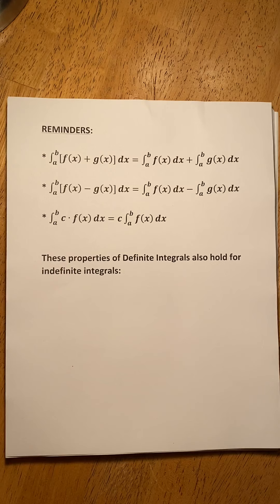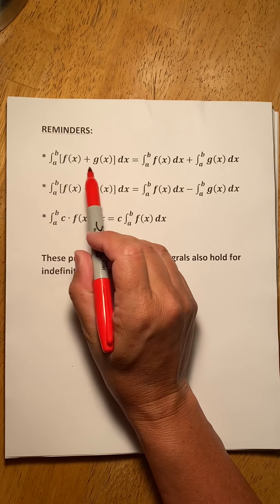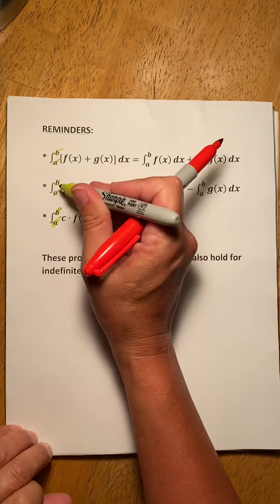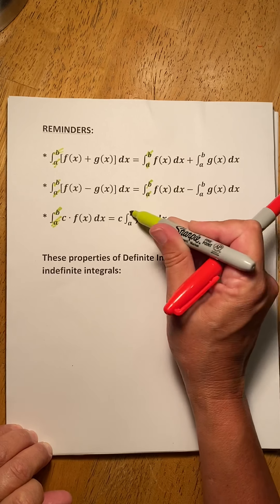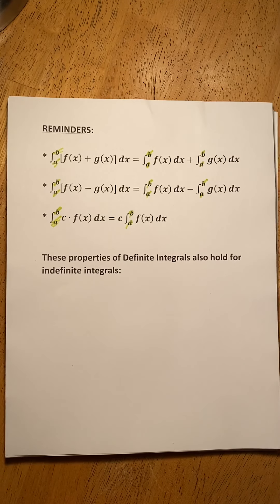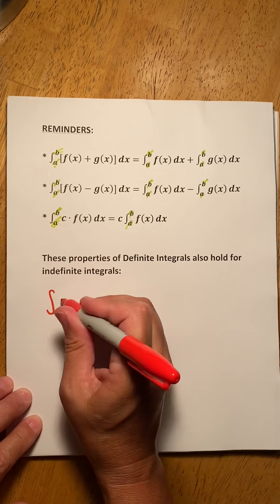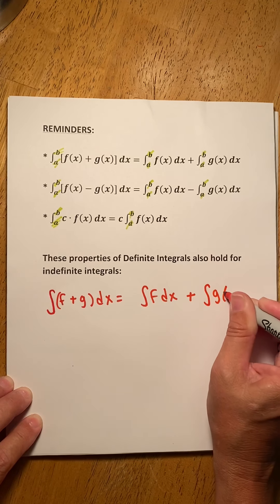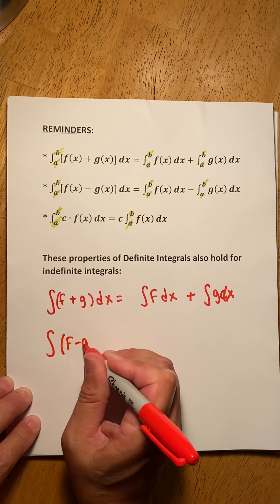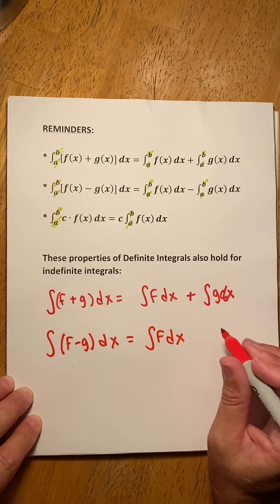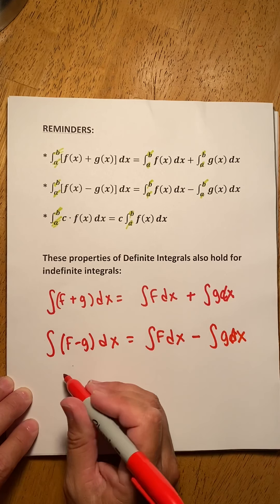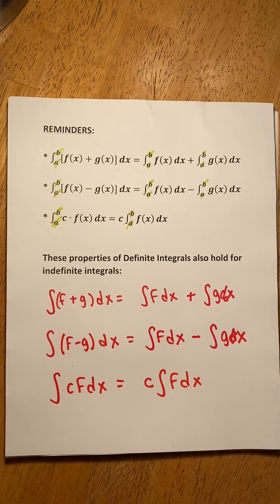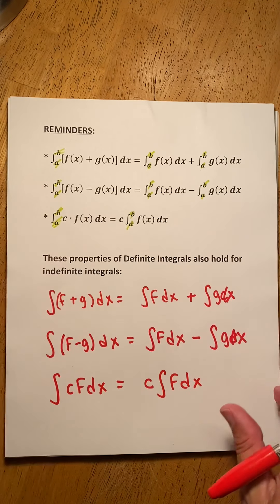A few reminders about definite integrals: we can distribute an integral through a sum or a difference, and we can pull a constant out front. These rules also apply to indefinite integrals — we write them without integration limits and the result is the same. We can distribute an indefinite integral through a sum or difference and pull a constant out front. The integral of a sum is the sum of the integrals, the integral of a difference is the difference of the integrals, and if we have a constant times a function, we pull the constant out front and integrate the function.